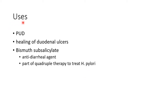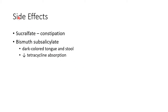Let us see about the uses of mucosal protective agents. They are used in peptic ulcer disease to promote healing of duodenal ulcers. Bismuth subsalicylate is used as an antidiarrheal agent and is also a part of quadruple therapy to treat Helicobacter pylori infection.